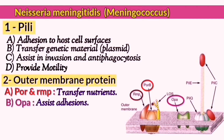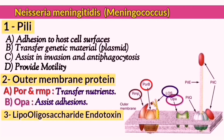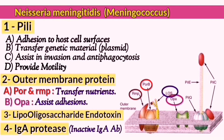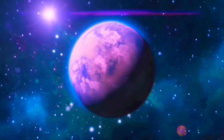Meningococci also produce lipo-oligosaccharide, enterotoxin, and IgA protease, which inactivates IgA antibodies. IgA antibodies are among the most important antibodies because they protect the body from bacteria found in the mucous membranes of the respiratory and reproductive systems.